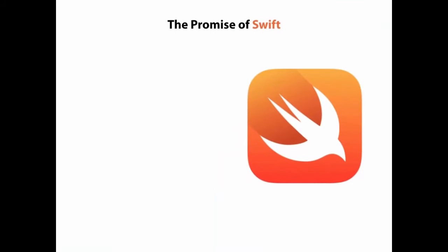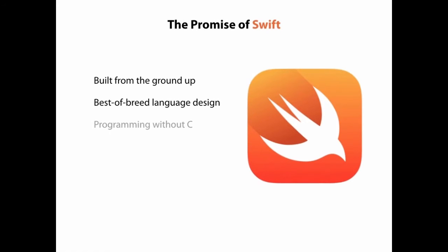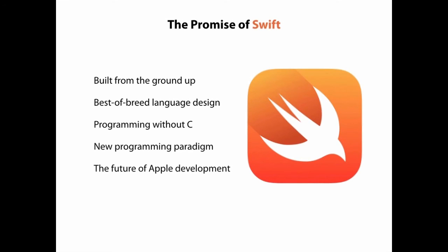Swift is billed as an entirely new language built from the ground up. It takes the best features of several different languages and combines them into something brand new. The Swift language is meant to leave behind the accumulated legacy of C and Objective-C and to become the new modern language of choice on the Apple platform.